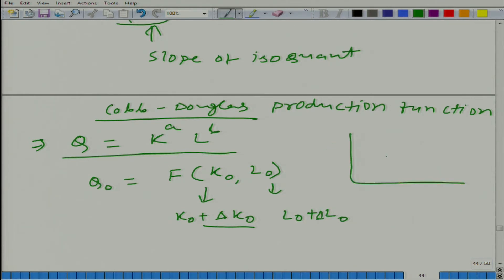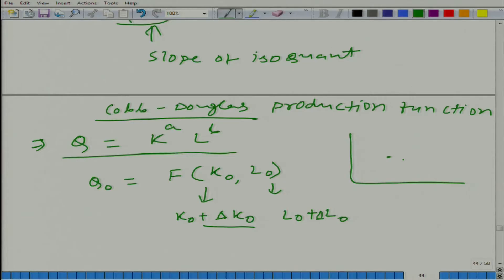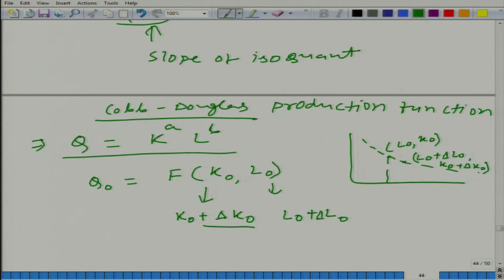Remember in this graph we start here and we are trying to move — we will change l such that we come to the isoquant. So we will come to here. The earlier point is k-naught, and the new point is, of course, what we are assuming: they are on the same isoquant — here we have l-naught plus delta l-naught, k-naught plus delta k-naught.